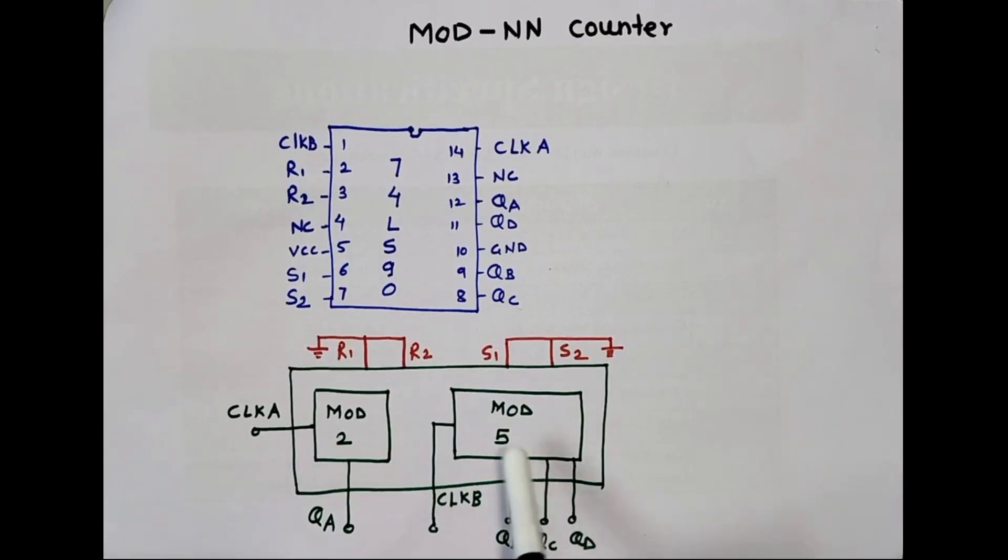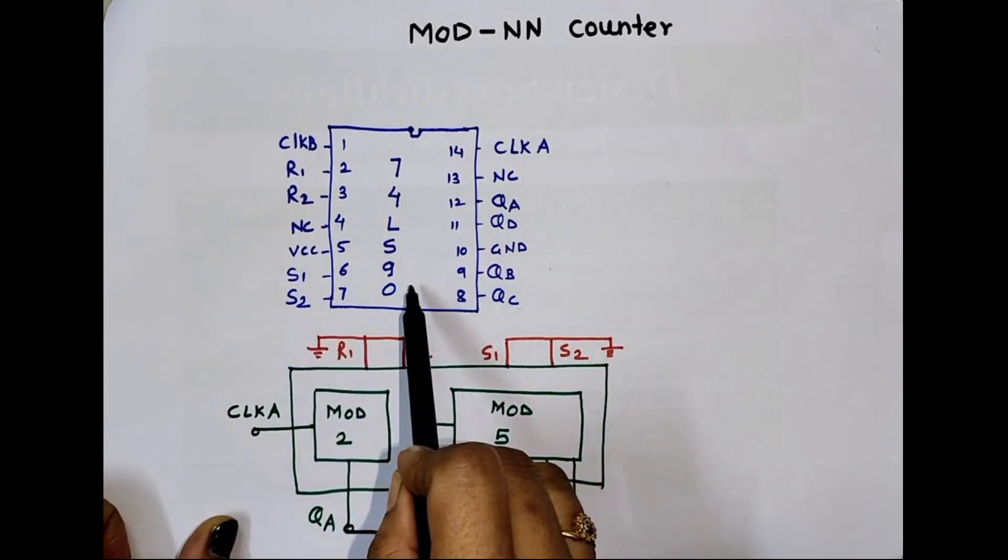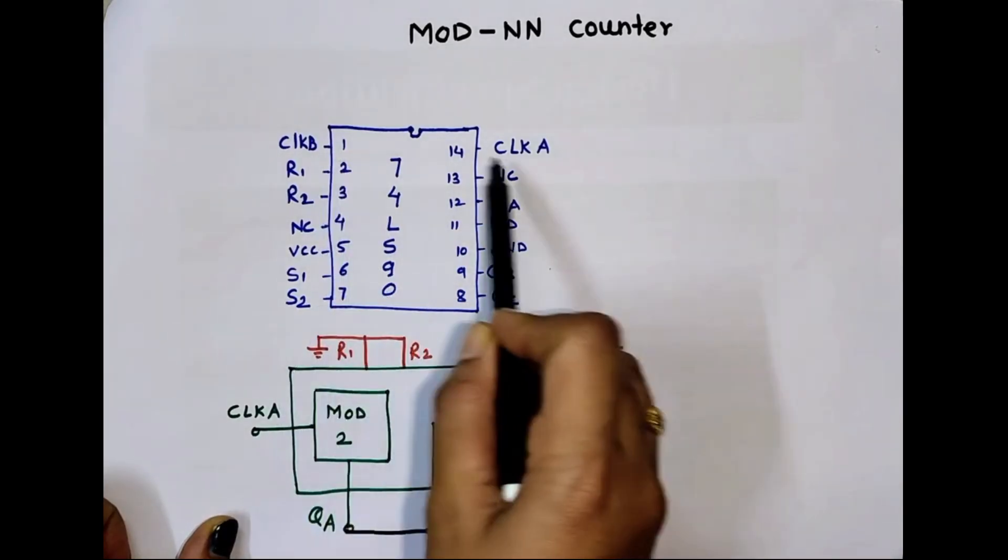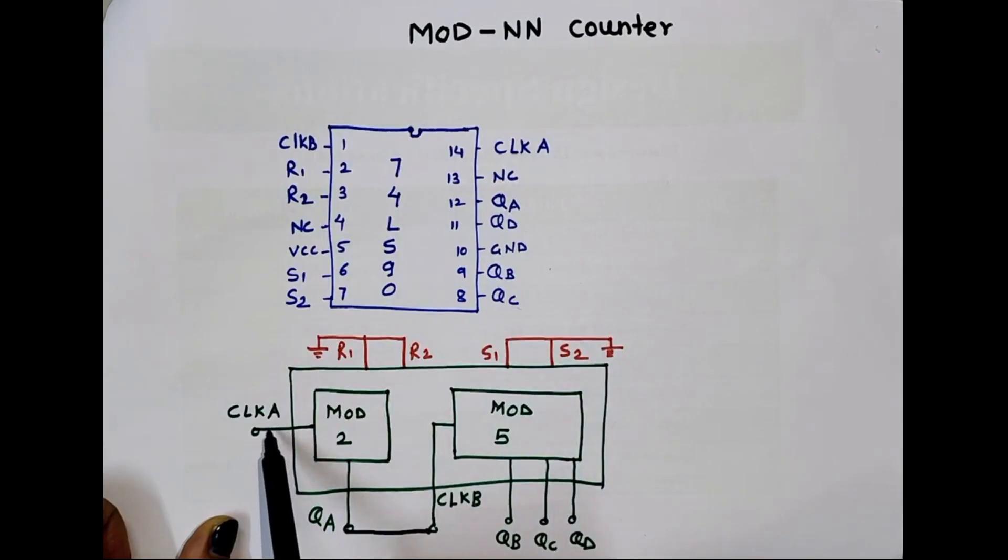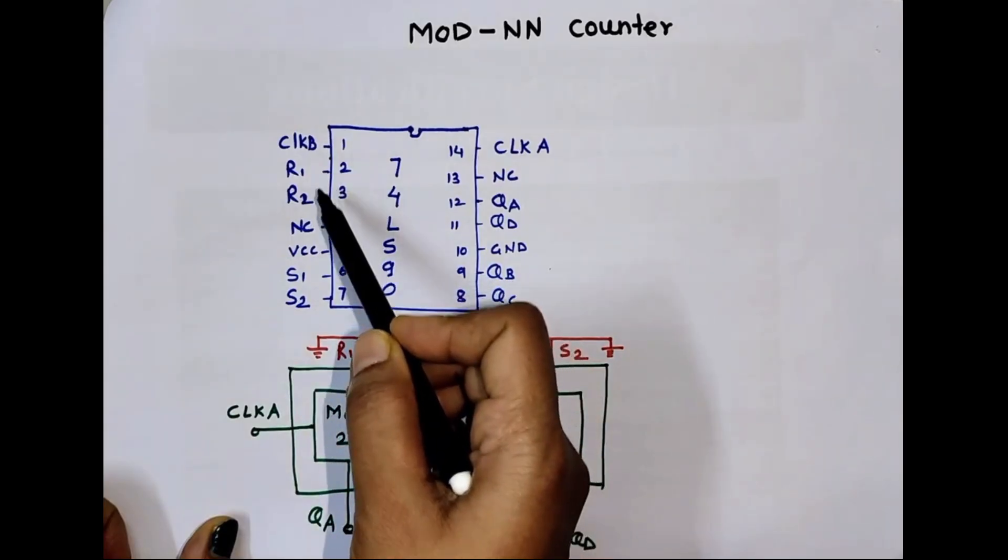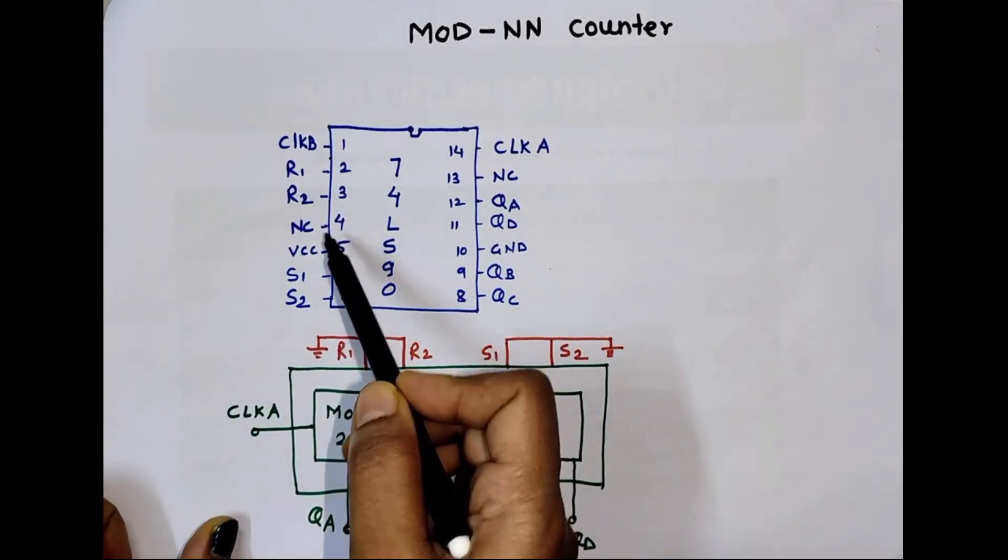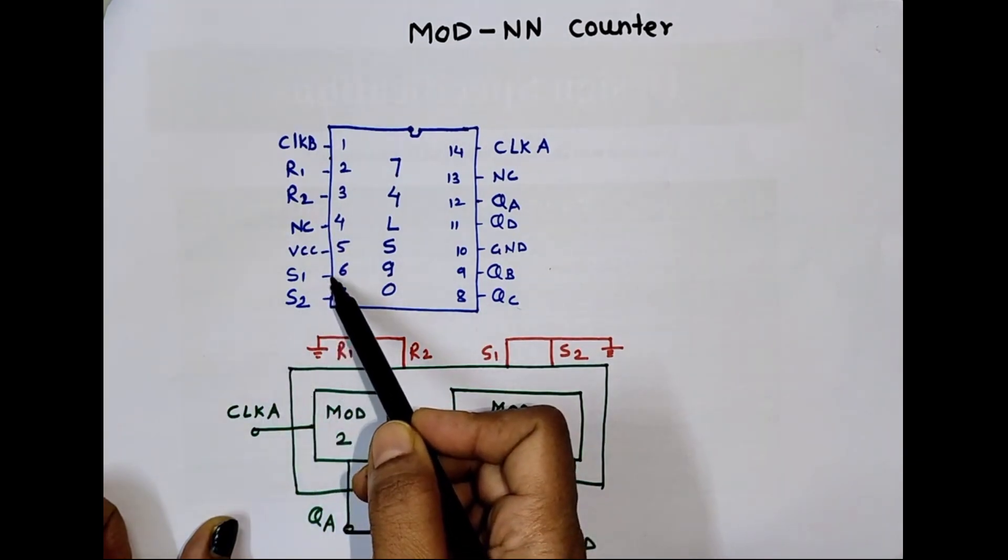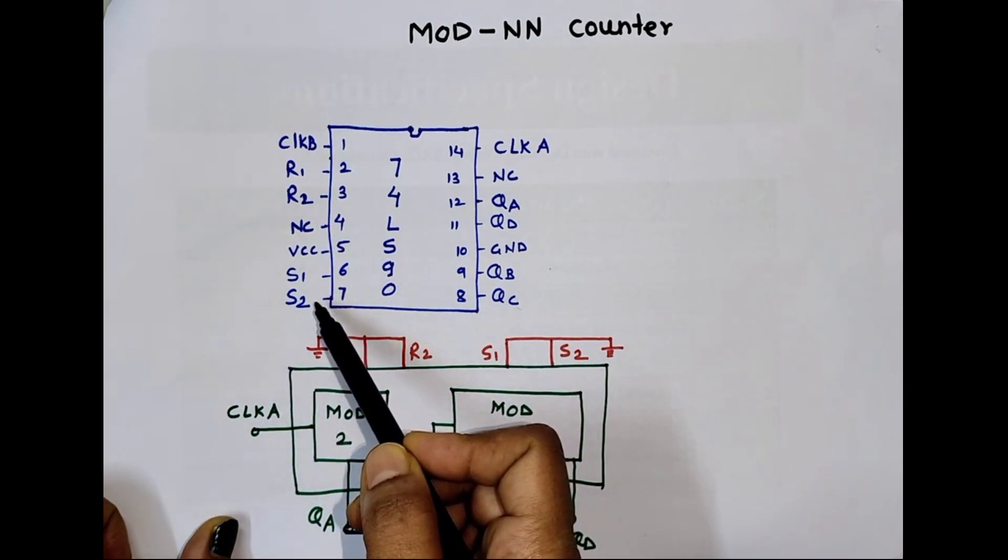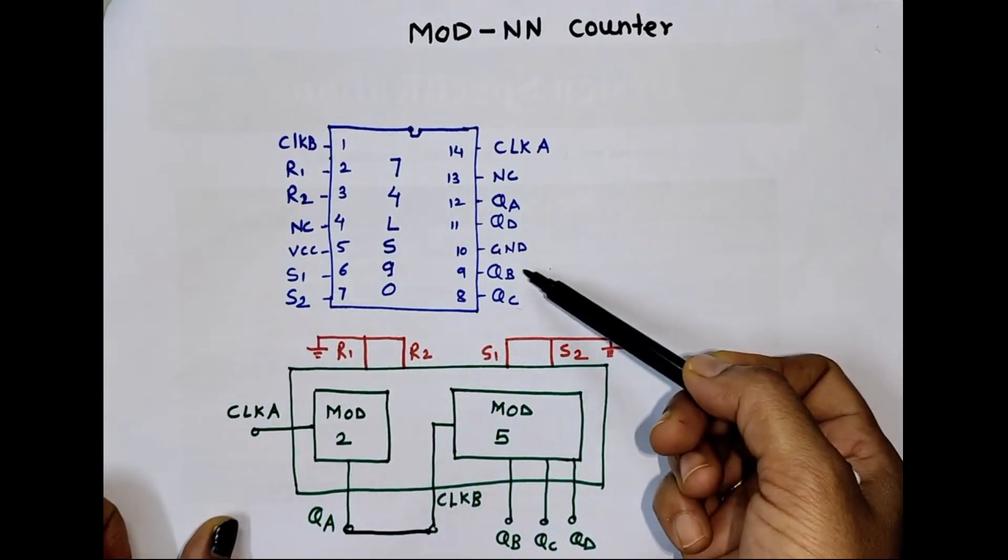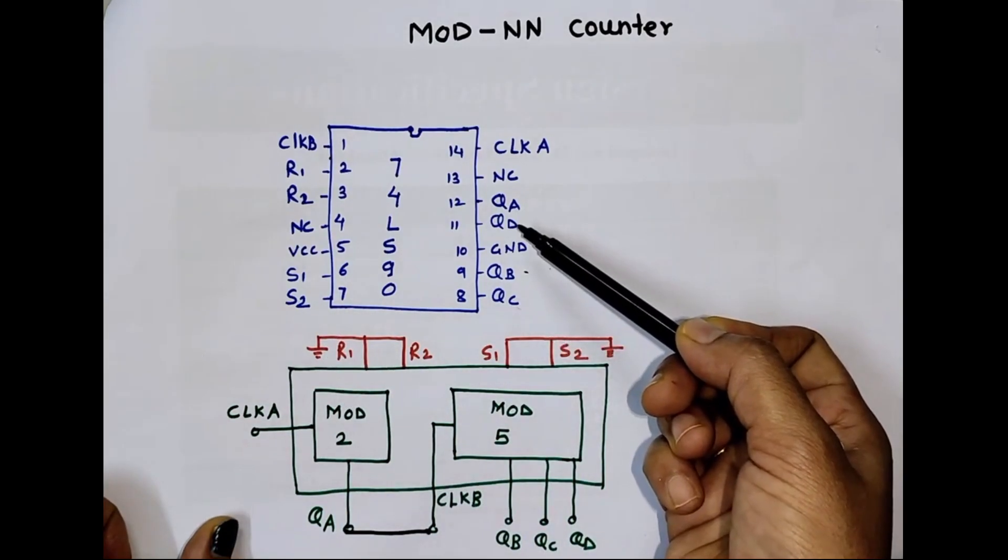To implement decade counter, we need to connect output of MOD-2 section to MOD-5 section. So always QA is connected to Clock B. This is pin diagram of IC 7490. This is Clock A, clock input to MOD-2 section. Clock B, clock input to MOD-5 section. R1 and R2 are reset pins. Pin number 4 is not connected. VCC, pin number 6 and 7 are set pins.